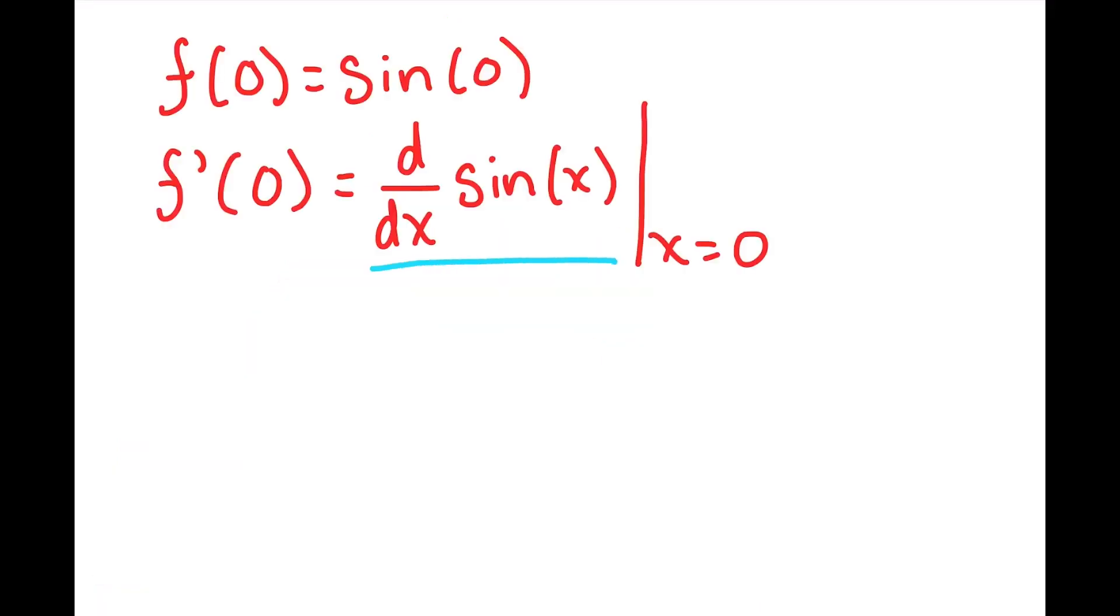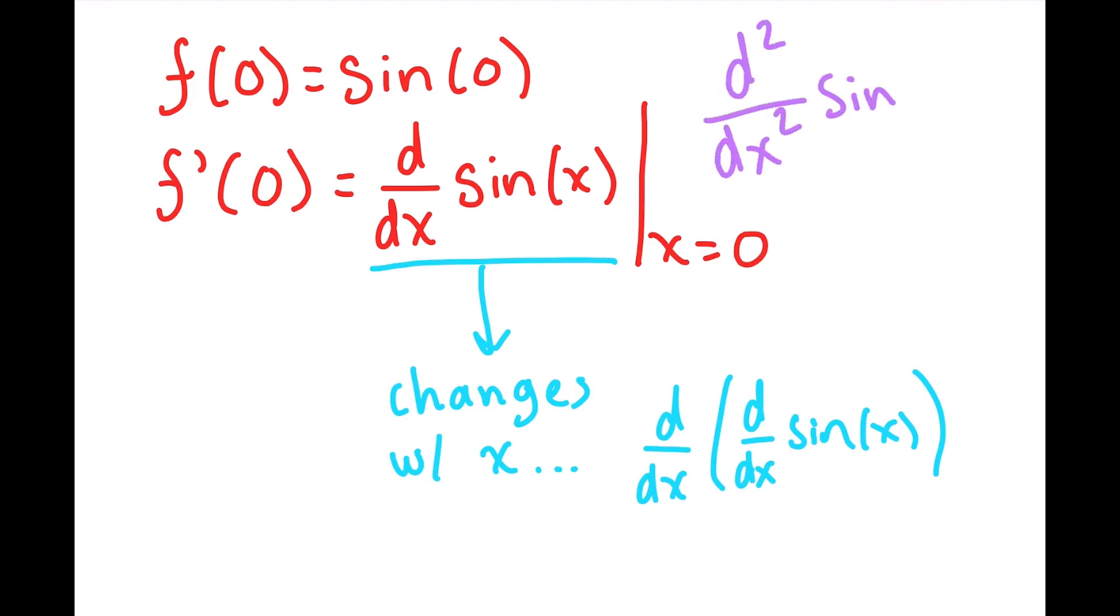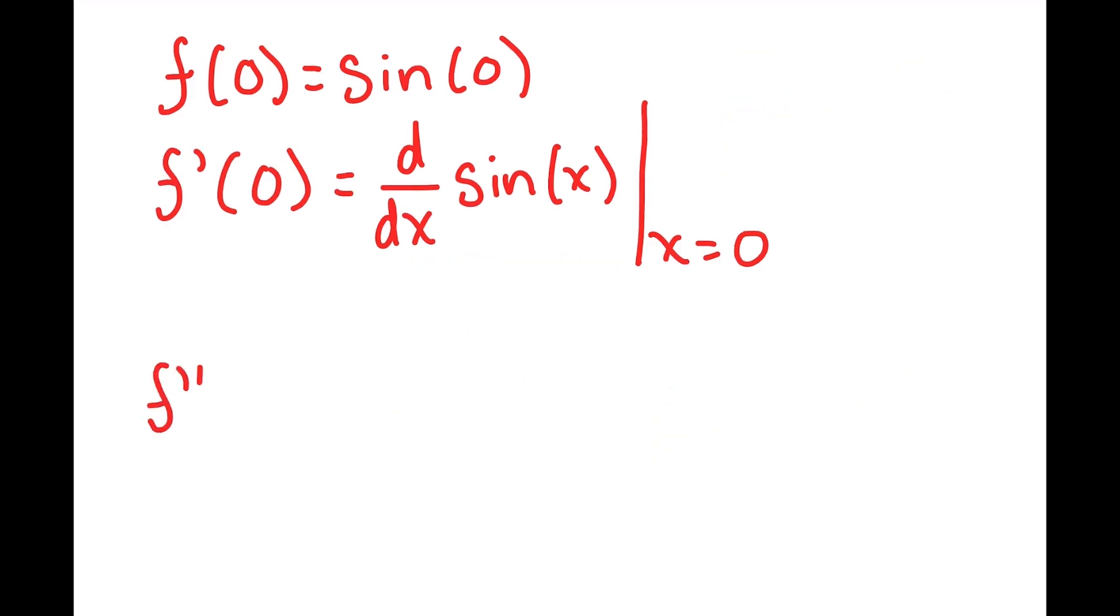But wait, we know how the rate of change of sine is changing, right? That's just the second derivative of sine. So if we set the second derivative of our approximator function equal to the second derivative of sine too, then our rates of change will be changing the same way.